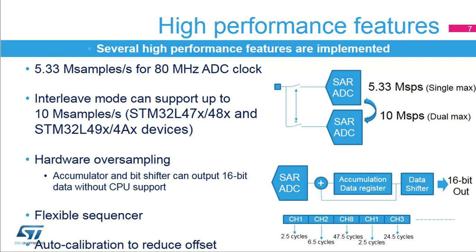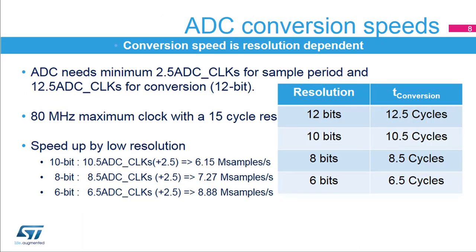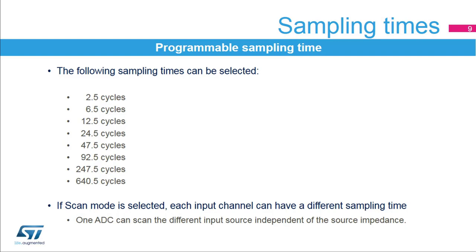The ADC offers an auto-calibration mechanism. It is recommended to run calibration if the reference voltage changes more than 10 percent — including when emerging from reset or from a low power state where the analog voltage supply has been removed and reinstated. The ADC needs a minimum of 2.5 clock cycles for sampling and 12.5 clock cycles for conversion. With an 80 MHz ADC clock, it can achieve 5.33 mega samples per second. For high-speed sampling, resolution can be reduced down to 6 bits, allowing up to 8.88 mega samples per second. The sampling time can be programmed individually for each input channel, and longer sample times ensure that higher-impedance signals are correctly converted.